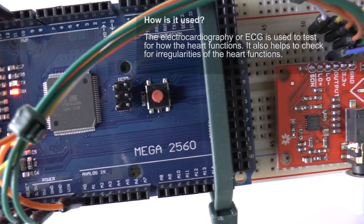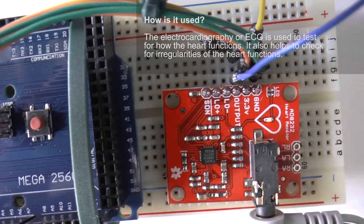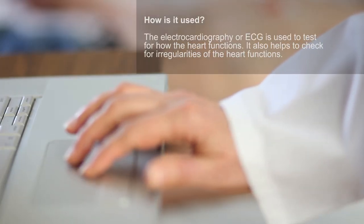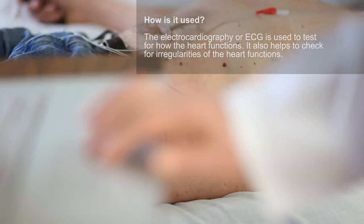How is it used? The electrocardiography or ECG is used to test for how the heart functions. It also helps to check for irregularities of the heart functions.